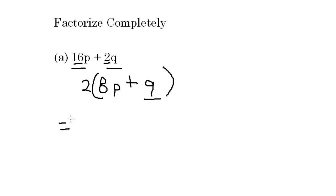Now you can test your answer. When you multiply what's in the bracket by 2, you're supposed to get the equation that we just factorized. So 2 times 8p is 16p, plus 2 times q is 2q. Notice we get the same equation as in the question, so our answer is correct.